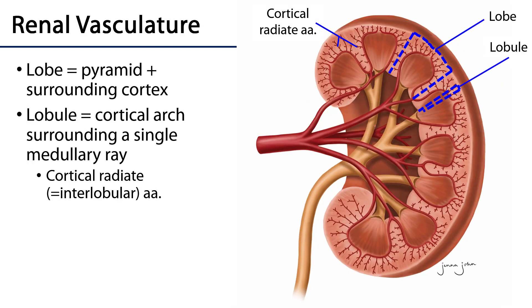It would be useful to define what a renal lobe and lobule are. A renal lobe consists of a renal pyramid as well as all of the cortex surrounding that pyramid — so half a column as well as the entire cortical arch. A lobule is a way of subdividing the lobe, and a lobule consists of all of the cortex surrounding a single medullary ray.